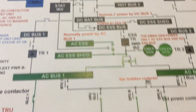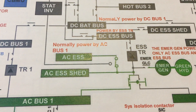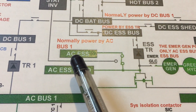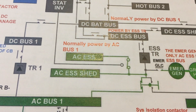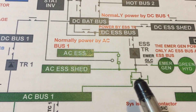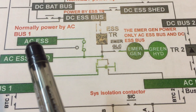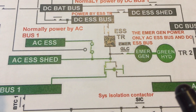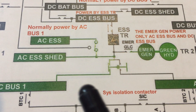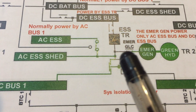Now let's talk about a very important bus — the essential bus. We have essential AC and essential DC. The essential AC bus is the most important bus in the aircraft, which is why it can be powered by two different sources. Normally it is powered by AC bus number one. If we lose AC bus number one, a contactor switches so AC bus number two can power the essential AC. If we lose both AC bus number one and AC bus number two, the aircraft goes to the emergency configuration.